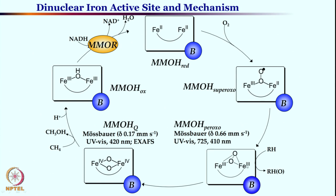From the peroxo intermediate one can also characterize the bis-mu-oxo species, which is the iron(IV)/iron(IV) bis-mu-oxo species. Mössbauer spectroscopic data as well as UV-visible and EXAFS data are consistent with this intermediate, known as intermediate Q (MMOH_Q). In this intermediate, both irons are in the +4 oxidation state, unlike the previous mixed-valence scenario for the peroxo.